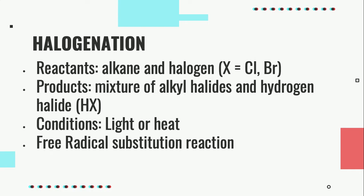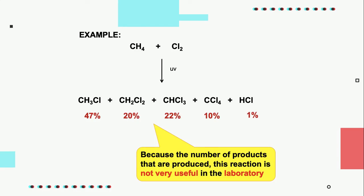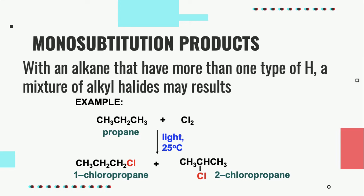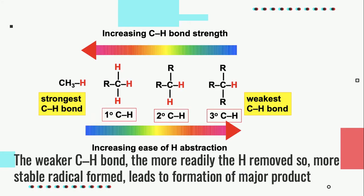The type of reaction of halogenation of alkane is free radical substitution reaction. There are five possible forms of products formed during this reaction. A variety of alkyl halides are produced due to the different types of hydrogen present in the alkane. The weaker the C-H bond, the more readily the hydrogen is removed, so a more stable radical forms, leading to the formation of the major product.